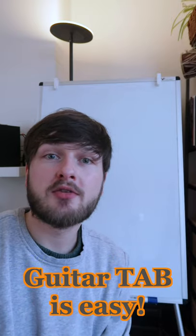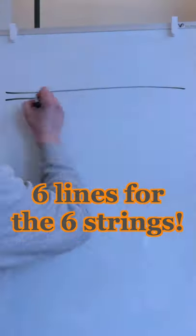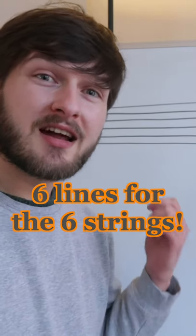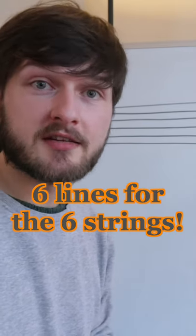Guitar Tab is one of the easiest ways to read music. We start with six lines. Confusingly, the line at the bottom is the one nearest your face and the line at the top is the one nearest your feet when you're holding your guitar properly.